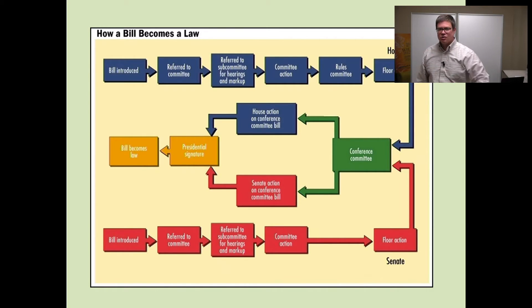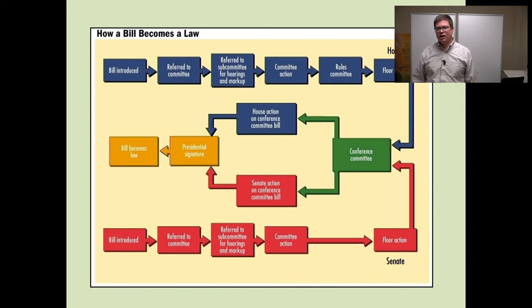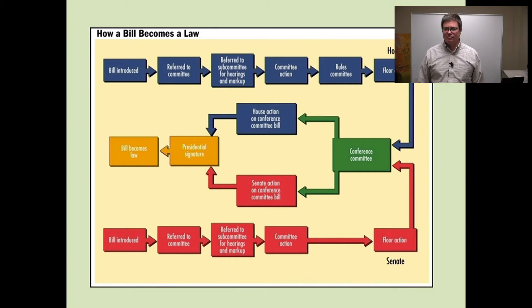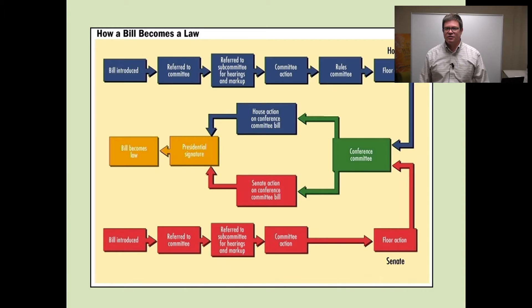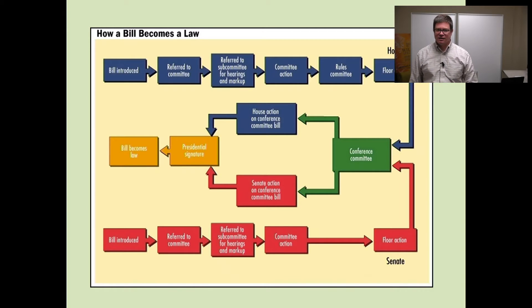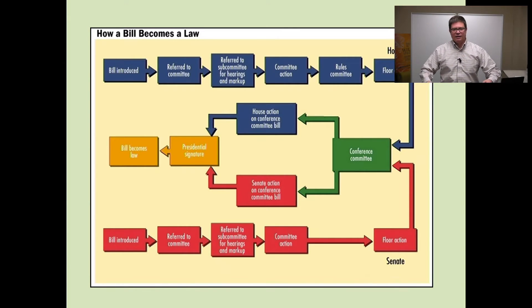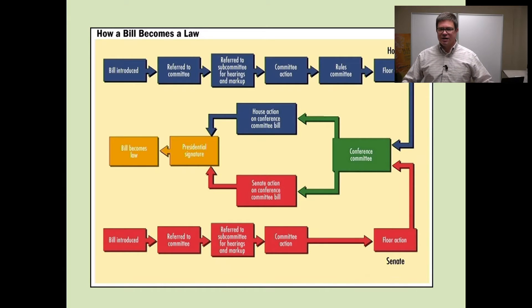Then it goes to the Rules Committee, which sets up the terms for debate — they'll say we're going to debate this for 20 hours, Democrats get 10 hours, Republicans get 10 hours, and then we'll vote. At the end of that debate there's a vote, and if more than half of the House says yes, it passes. Simultaneously on the other side of the Capitol, someone introduced the same bill in the Senate, it was referred to a committee, they hold hearings and mark it up, and then the committee passes it on for Senate floor action.